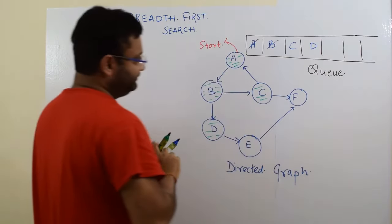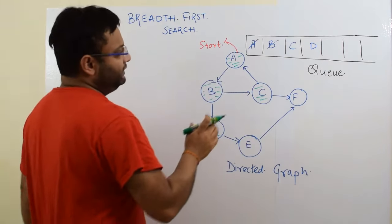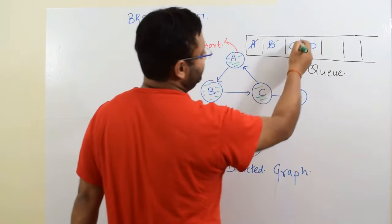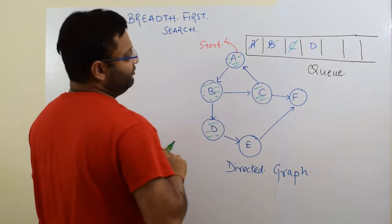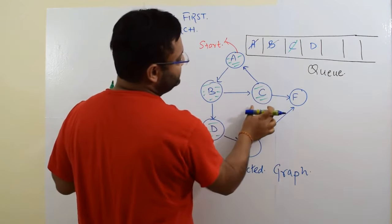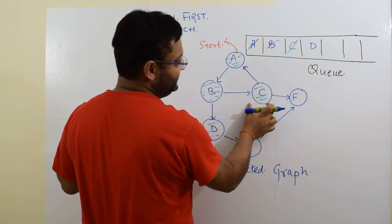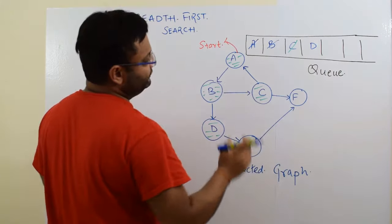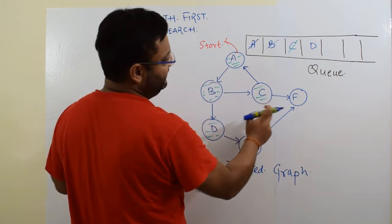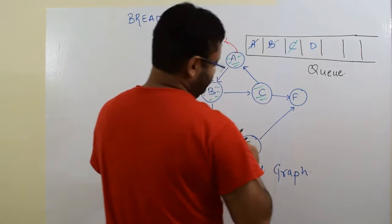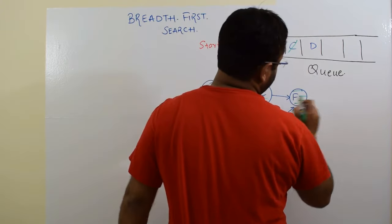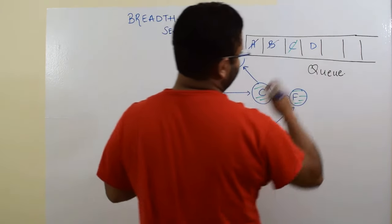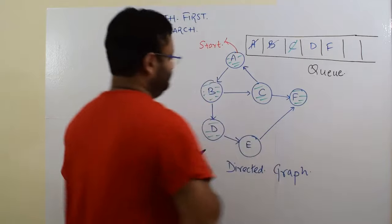Now which element will you dequeue? Definitely C. Now you have taken C out. You will see the neighbors of C which have not been visited so far. A is already visited. Only F is not visited. So you mark F as visited and push it into the queue.